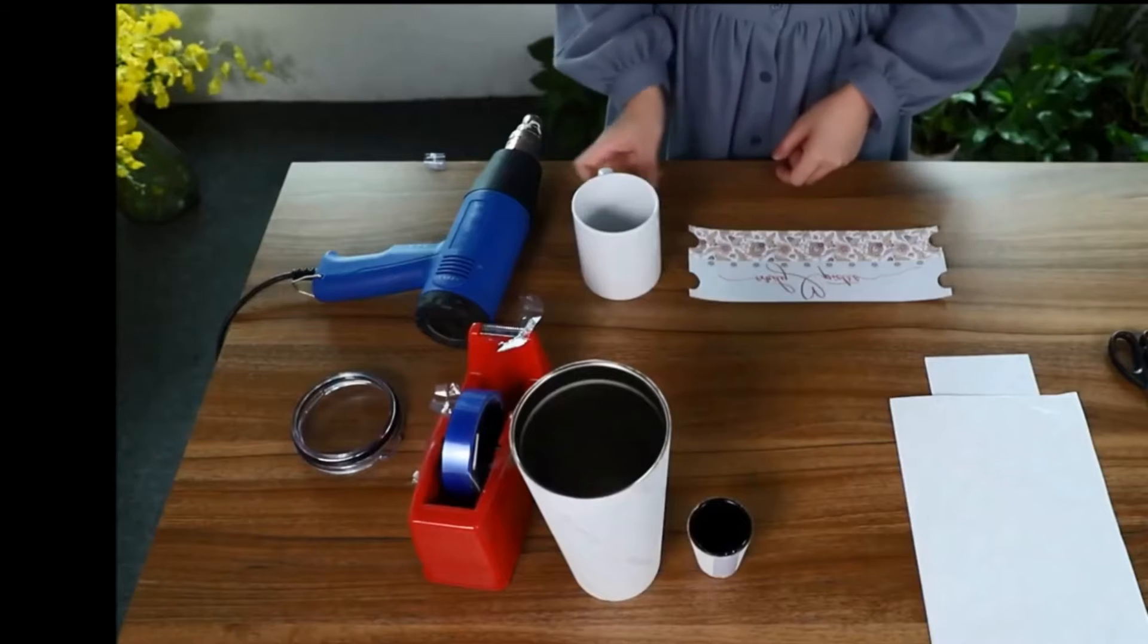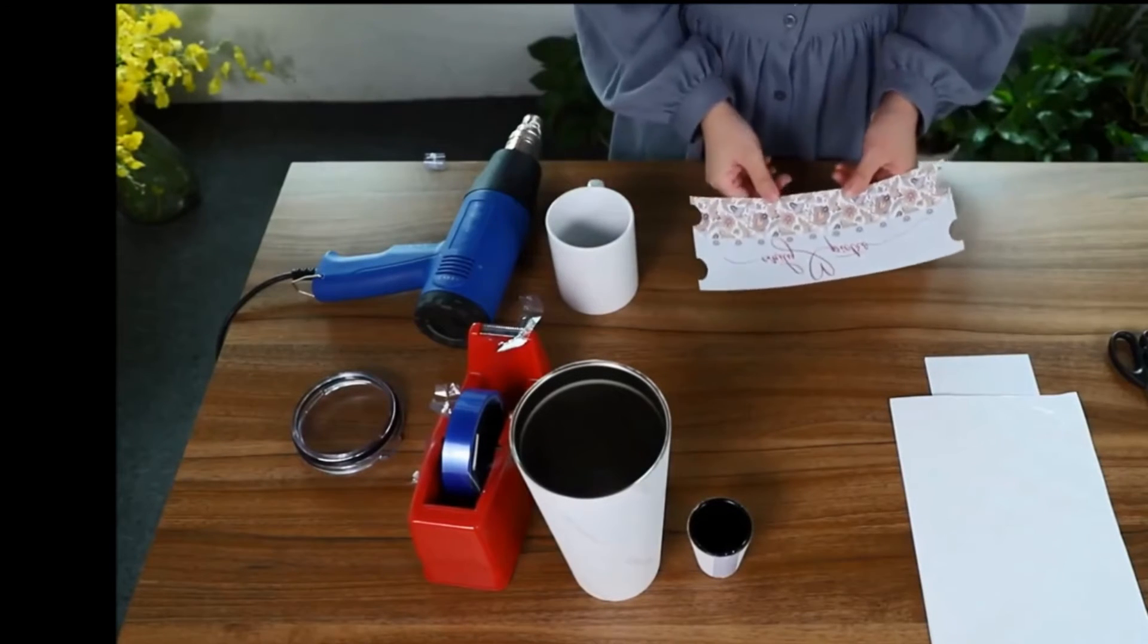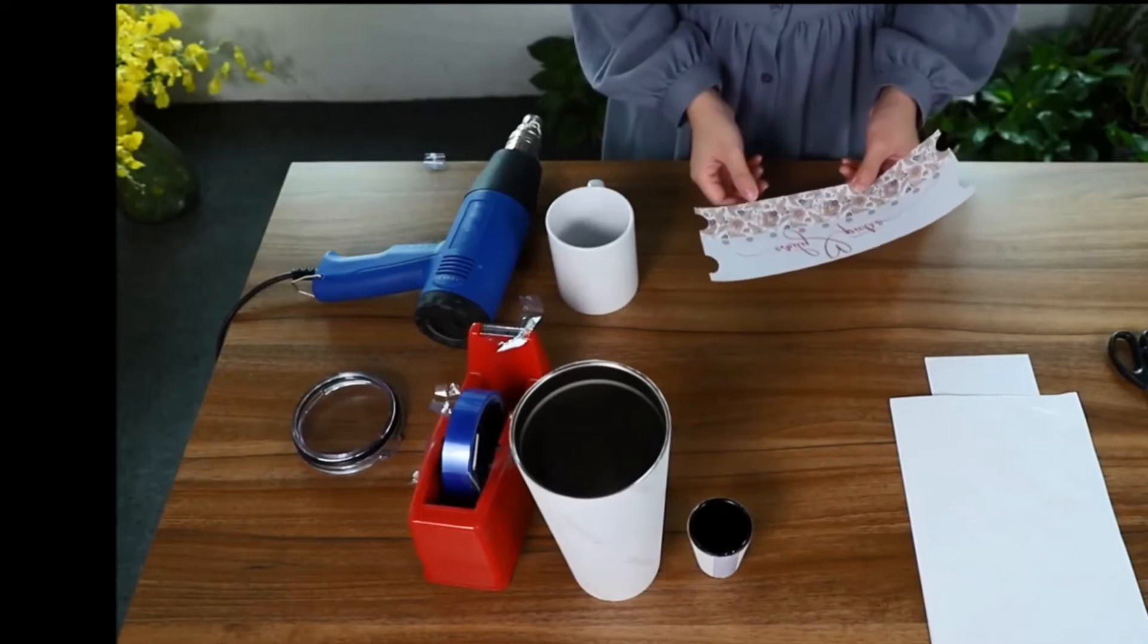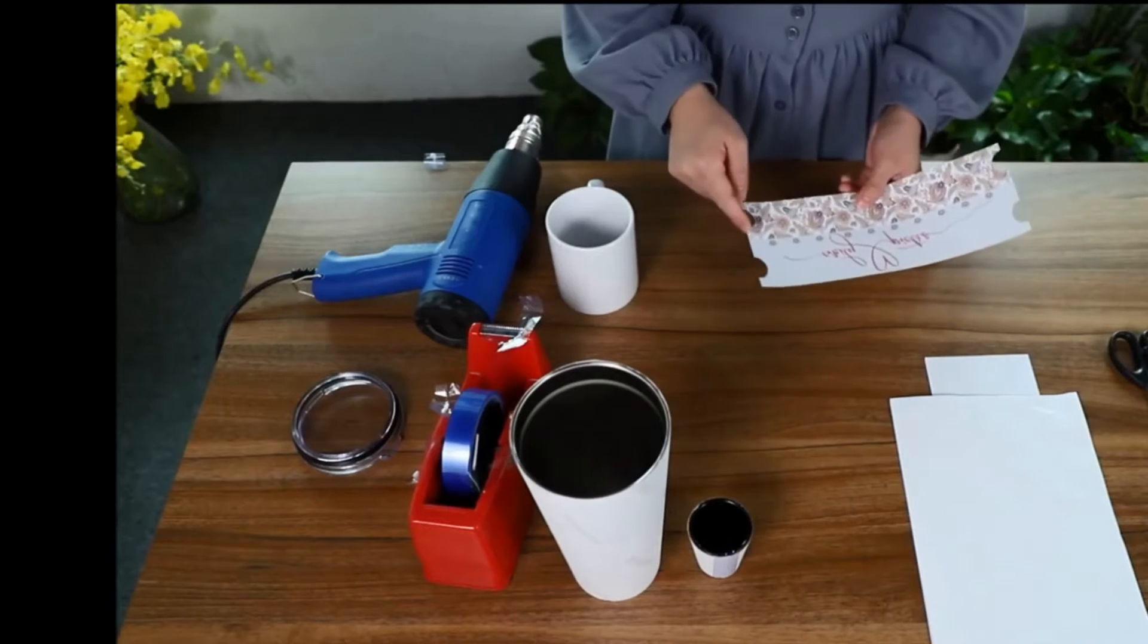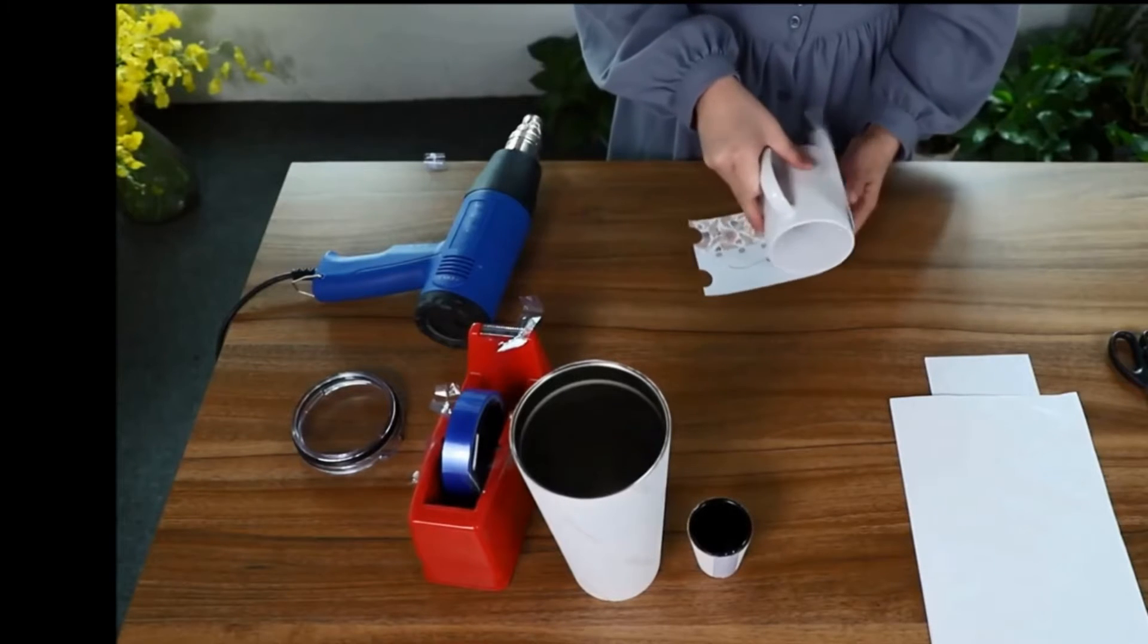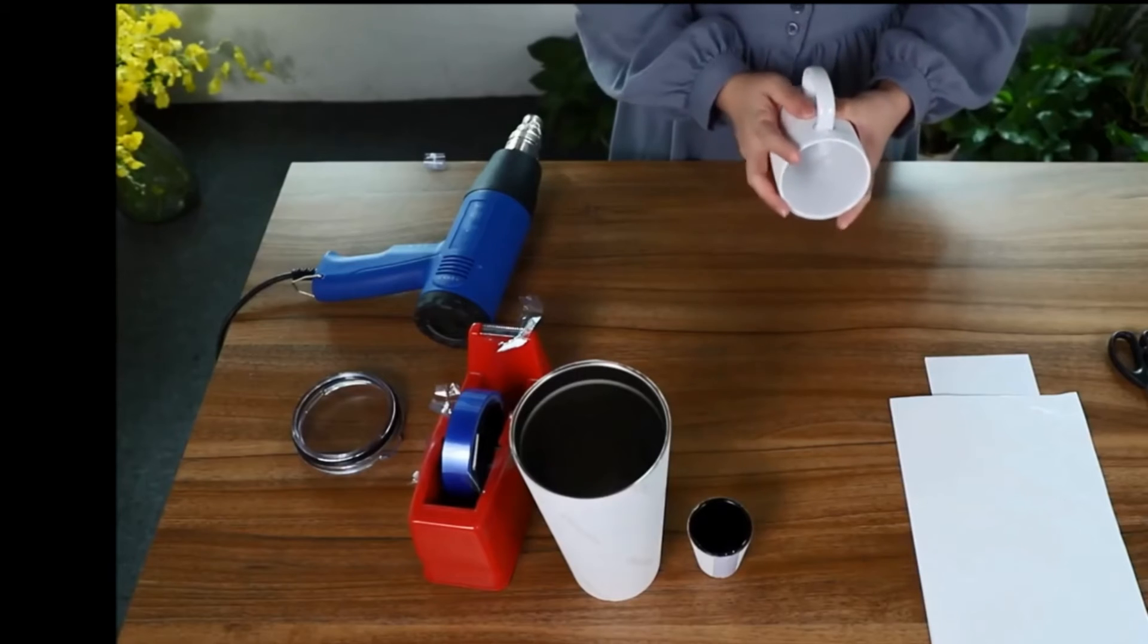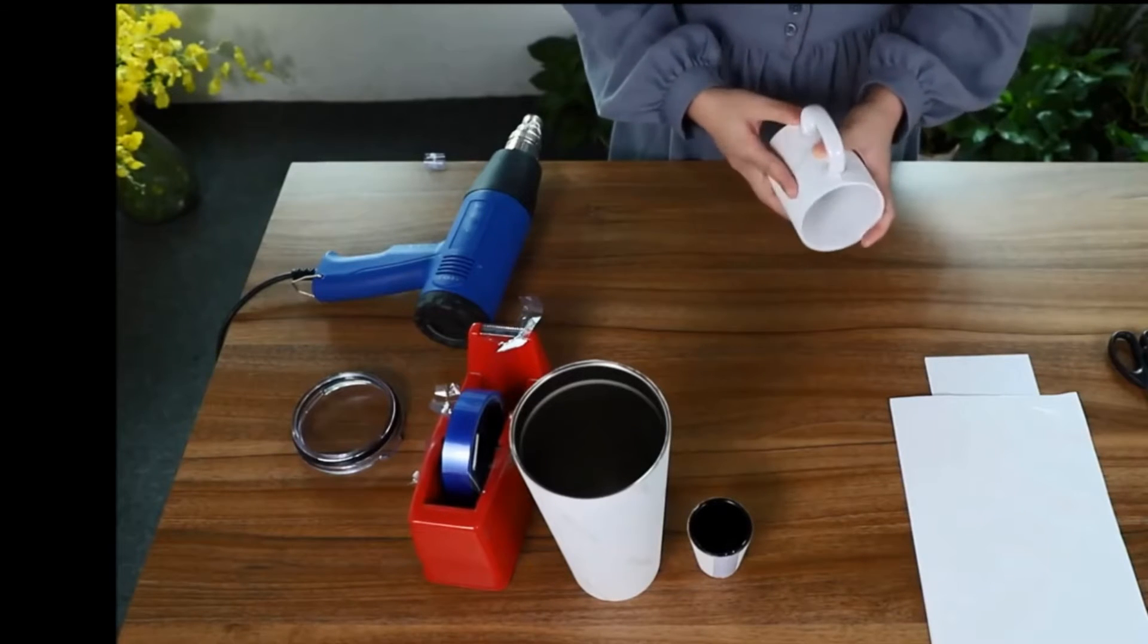Well, for the mug, because it has a handle, so I have prepared this image based on the special full bleed template. You can see it has four semicircles to fit the mug handle perfectly. Just like this.